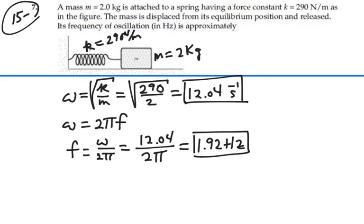Generally, we think of radians as a unitless quantity, so that's why we write it as seconds to the negative 1, because it's radians per second. We think of per second in terms of frequency as hertz — that's the unit for it, and that's also per second. So 1.92 hertz is our answer for problem 15.7.